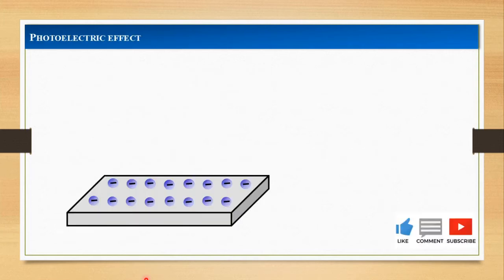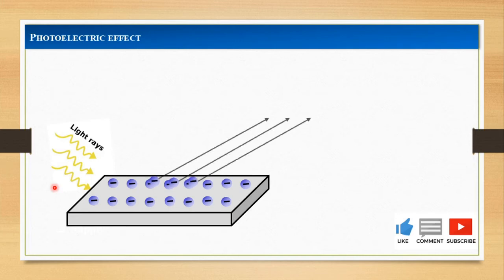After knowing the properties of photons, we can study the photoelectric effect. When light falls on a metal surface, some electrons near the surface absorb enough energy from the incident radiation to overcome the attraction of positive ions in the material of the surface. After gaining sufficient energy from the incident light, the electron escapes from the surface of the metal into the surrounding.